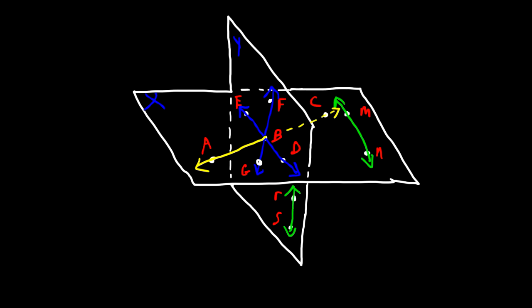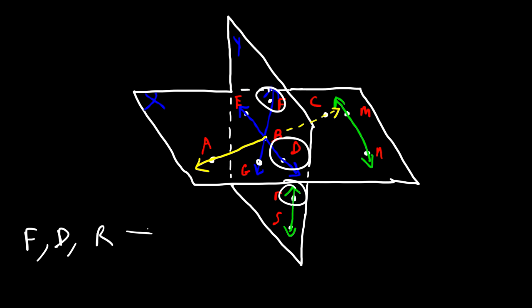What about points F, D, and R? These three non-collinear points determine which plane? F is on plane Y, not X. D is on both plane X and Y. And R is on Y, but not X. So these three points determine plane Y.